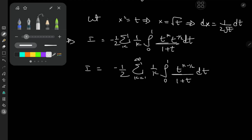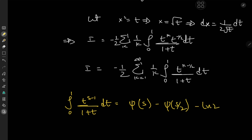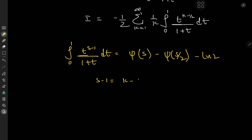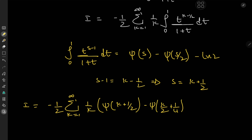Now we make use of a result derived previously: the integral from 0 to 1 of t to the (s minus 1) over (1 plus t) dt equals the digamma function at s minus digamma(s over 2) minus log 2. In our case, s minus 1 equals k minus one-half, which implies s equals k plus one-half. So I equals negative one-half times the sum over k from 1 to infinity of 1 over k times digamma(k plus 1 over 2) minus digamma(k over 2 plus one-quarter) minus log 2.